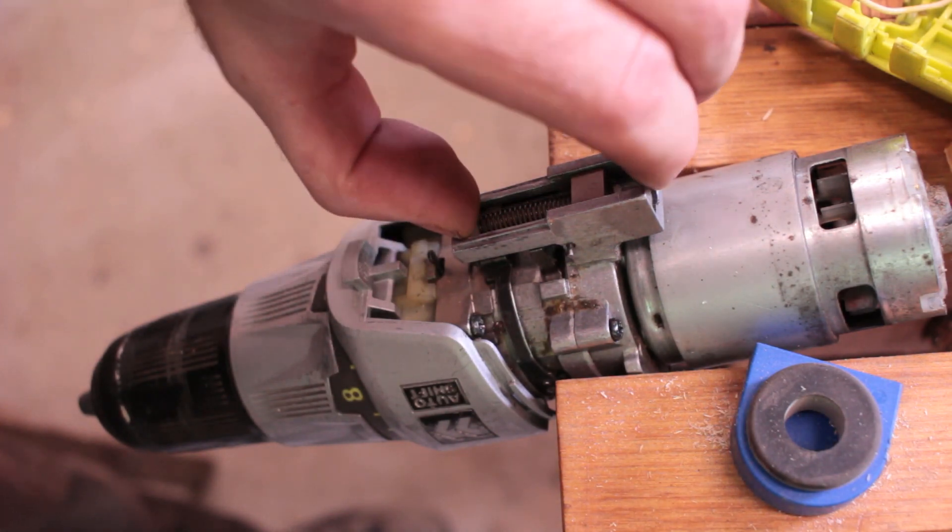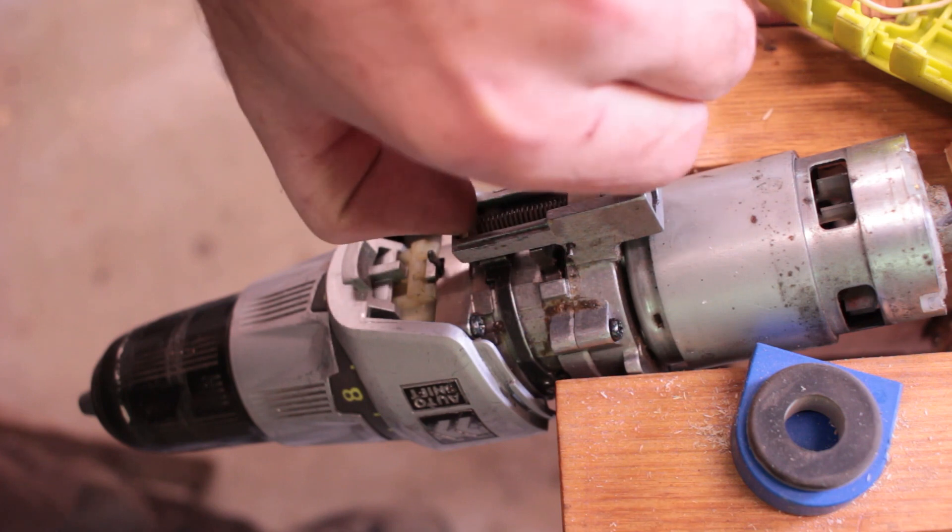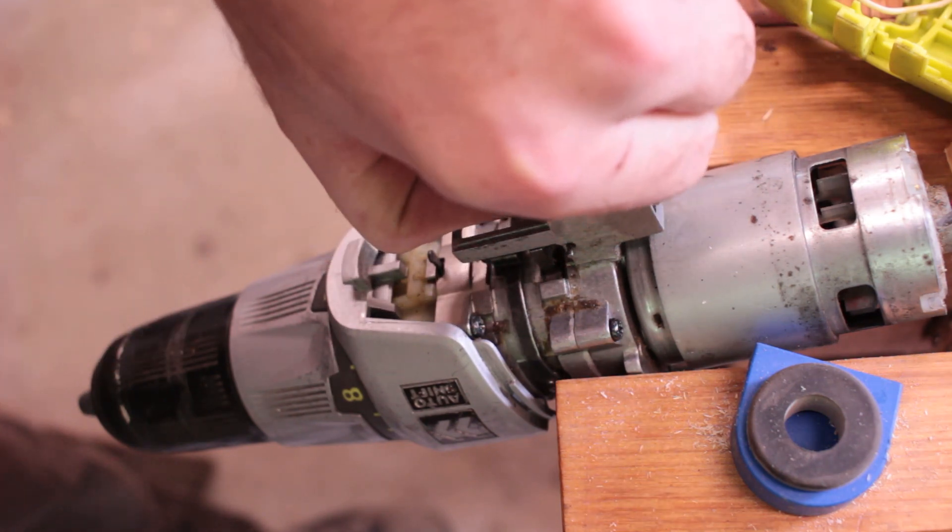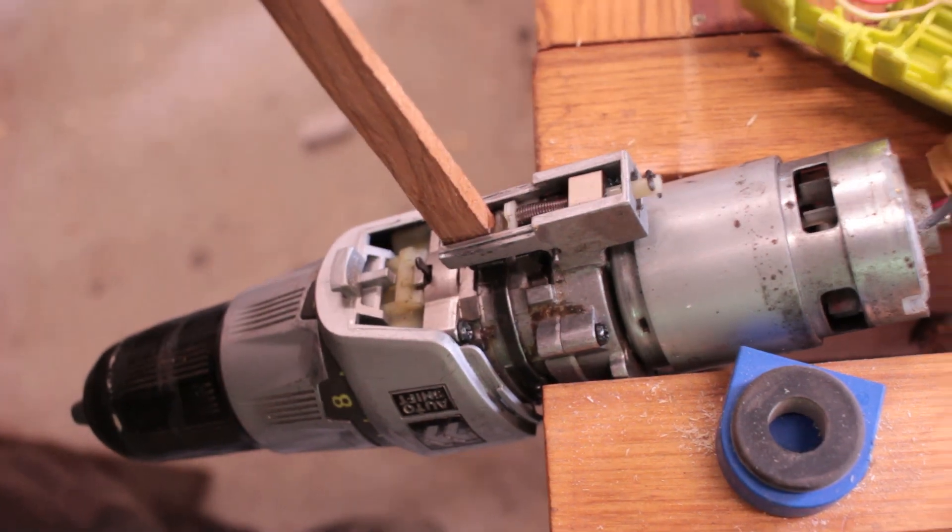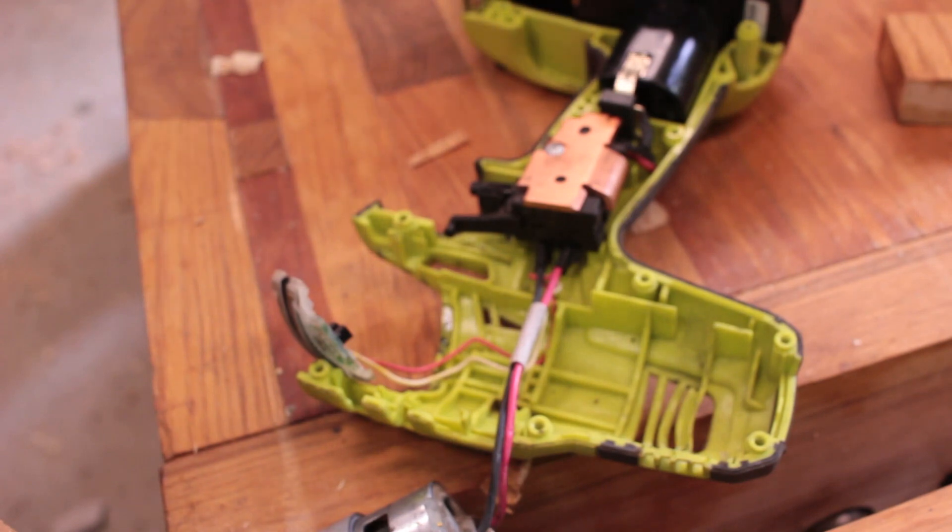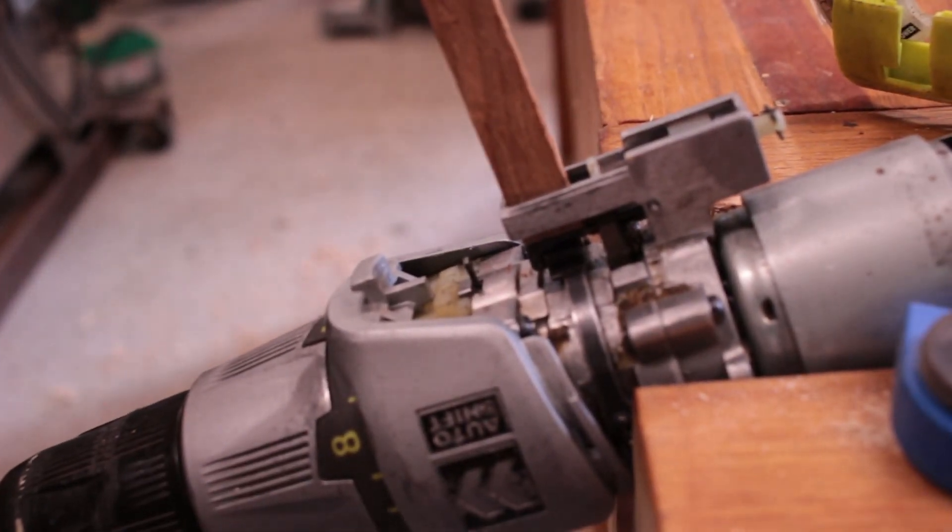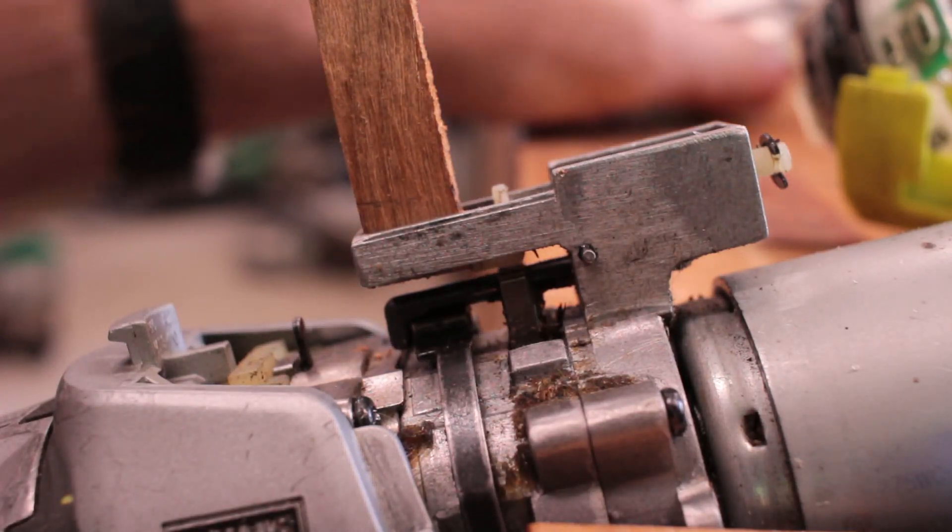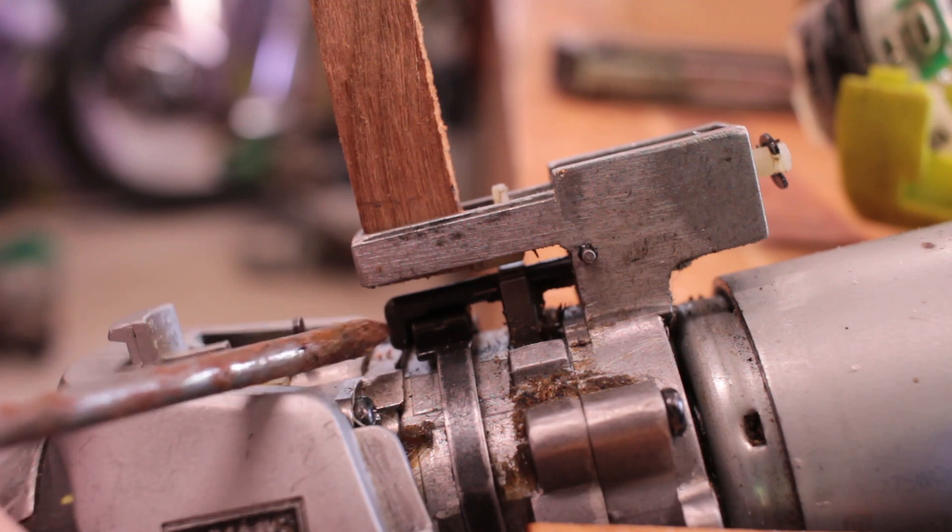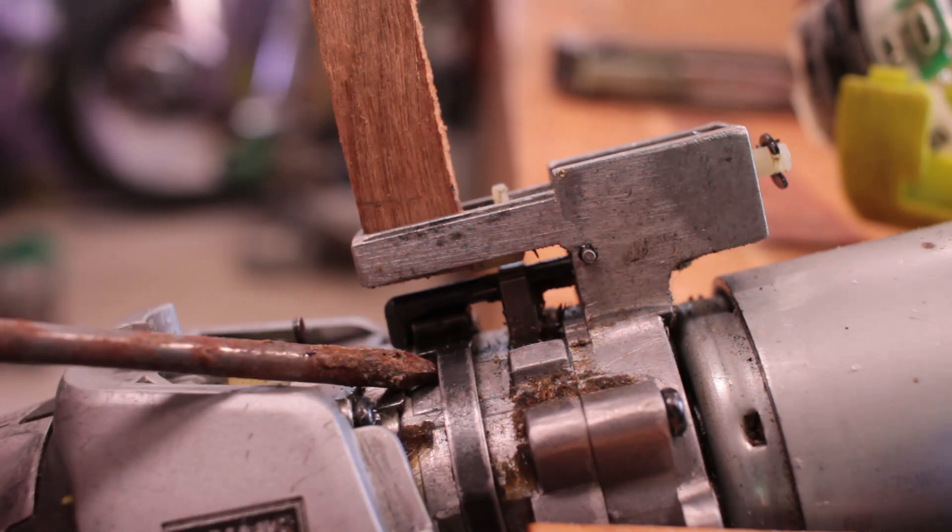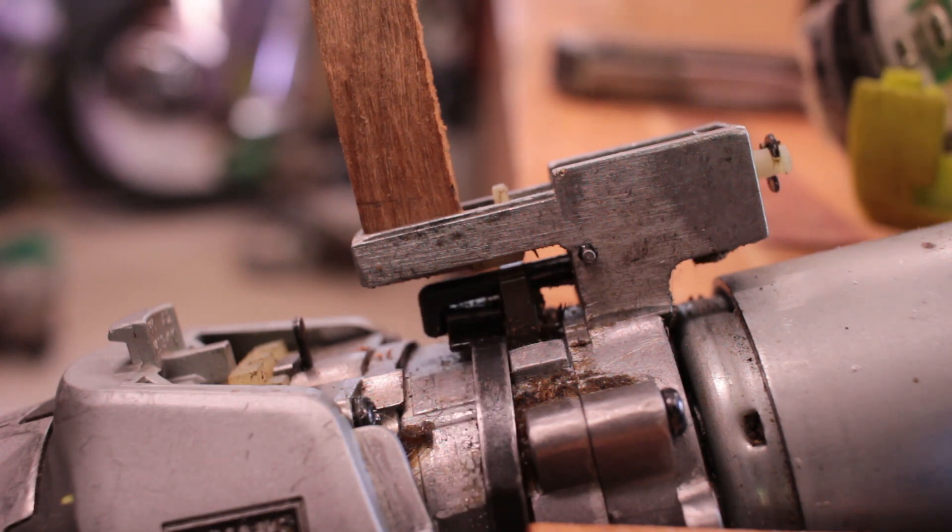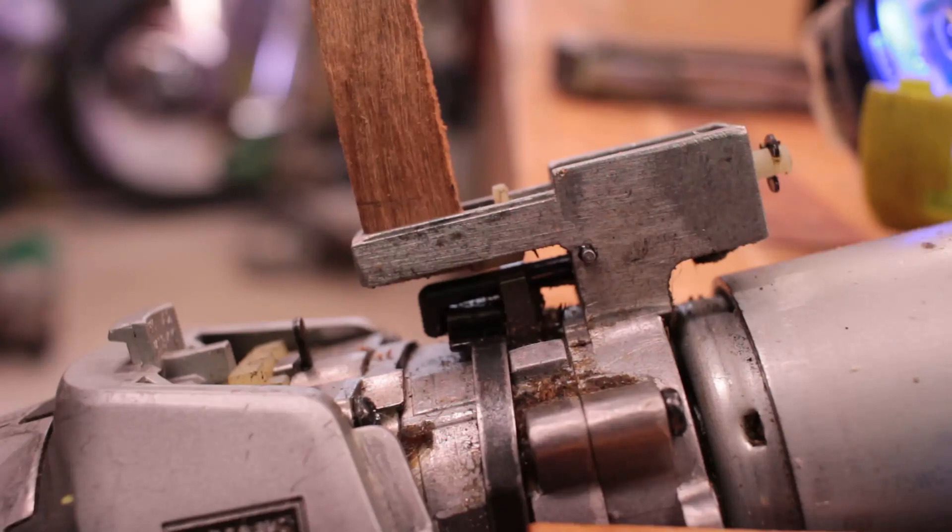I've got the drill in the vise so I can show you the shift mechanism working. When the trigger is pulled, it pulls back on this spring here, which pulls back on that collar. So I'm going to jam it with just a piece of wood in there to simulate holding the trigger. Because the actual trigger switch now is over here because the case is taken apart. This is a little hook that gets pulled back by the trigger. But if I give it a little blip, now we are in gear. And we are in high speed.